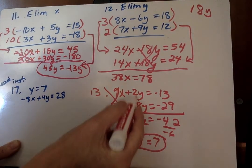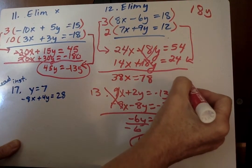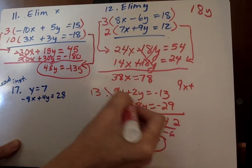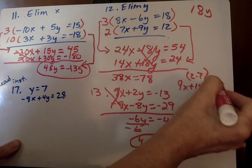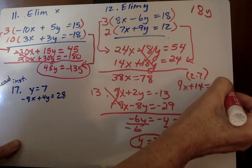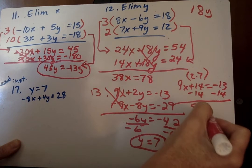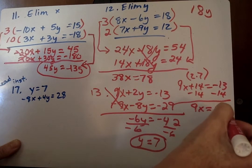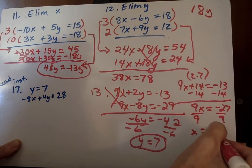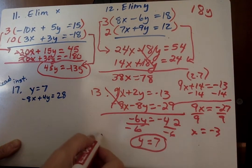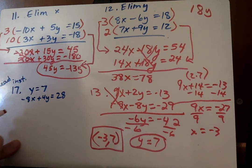Now, once we have the answer, we need to plug it back into one of the original equations. I'll put it into the top one, and we get 9x plus 2 times 7 is 14 equals negative 13. And I go minus 14, so 9x equals negative 27. Divide by 9, and x equals negative 3. So your final answer is negative 3, comma 7.